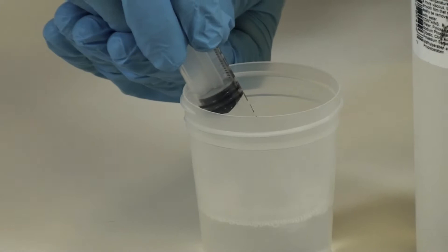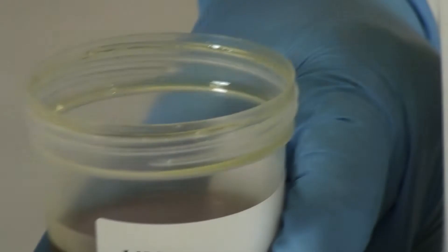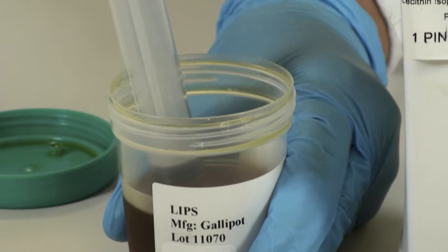In this step, we are going to be measuring LIPS. LIPS stands for lecithin isopropyl palmitate solution. Again, it's important to make sure there are no air bubbles in your syringe. So withdraw an amount and then remove any air bubbles and adjust for the final volume.